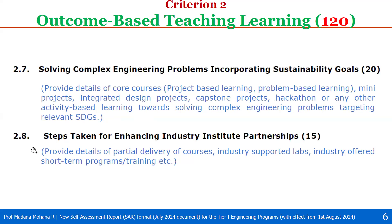Sub-criterion 2.8: Steps taken for enhancing industry-institute partnership — weightage 15. Provide details of partial delivery of courses by industry personnel, industry-supported labs, and industry-offered short-term programs or trainings, etc. These are all the sub-criteria of Criterion 2, Outcome-based Teaching Learning, which carries 120 weightage.